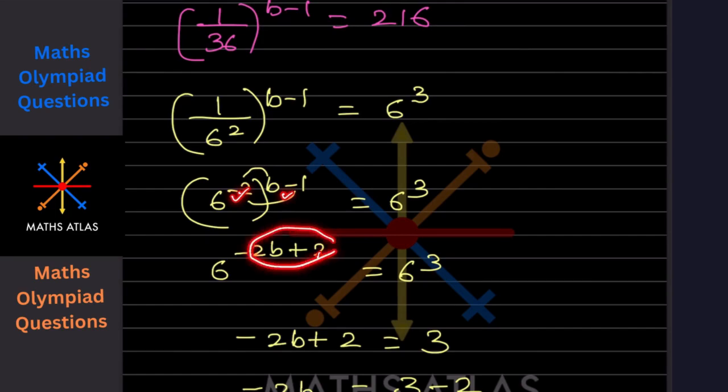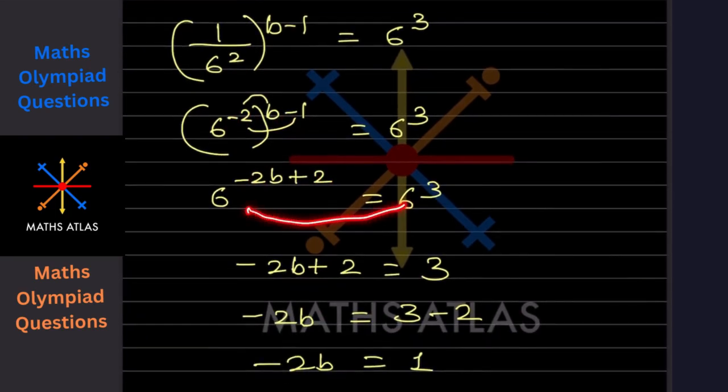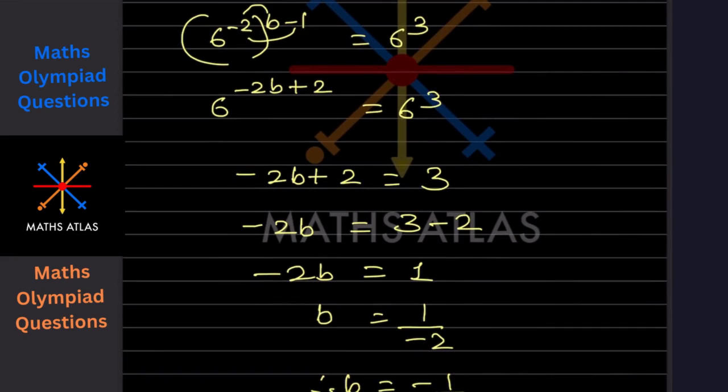Now the base is the same, so the exponents also should be the same. So minus 2b plus 2 equals 3.